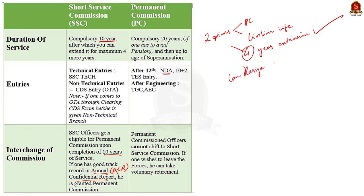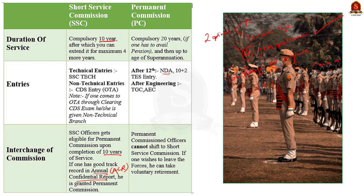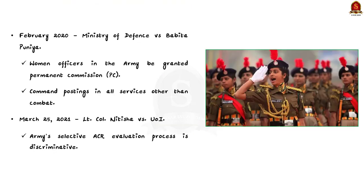The main issue discussed in the article is that while male short service commission officers could opt for permanent commission at the end of 10 years, this option was not available to women officers. Because of this, women were kept out of any command appointment and could not qualify for government pension, which only starts after 20 years of service as an officer. Because of this, the Supreme Court judgment in today's article becomes significant. The Supreme Court exercised its extraordinary power under Article 142 of the Constitution to do complete justice.